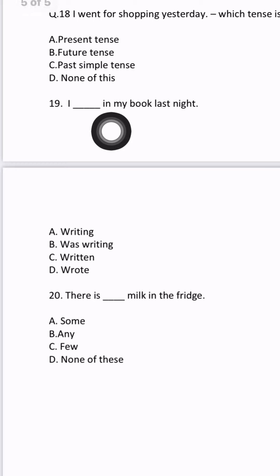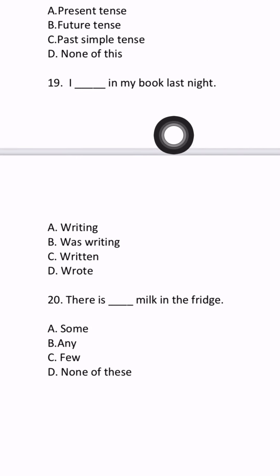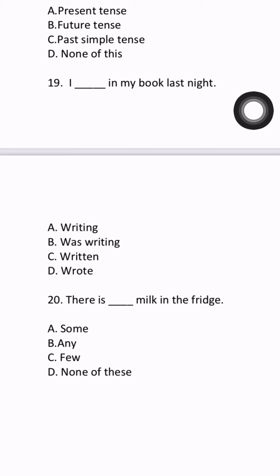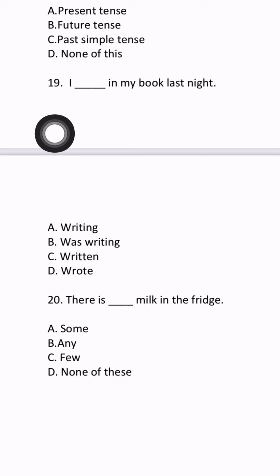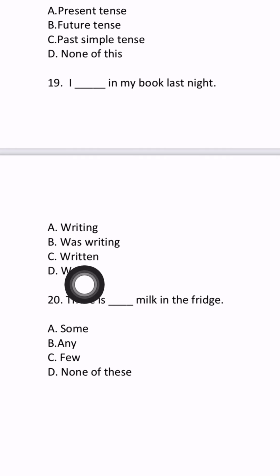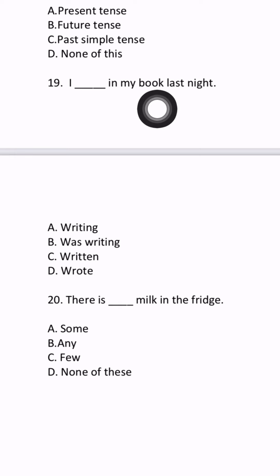Question number 19: 'I blank in my book last night.' They are talking about last night — that means it is past tense. If it were next night it would be future tense; if it were right now it could be present continuous or simple present. But last night is gone, so it is past tense. 'Writing' is for continuous tense; 'was writing' is past continuous; 'written' is for perfect tense. So we write 'wrote.' I wrote in my book last night.